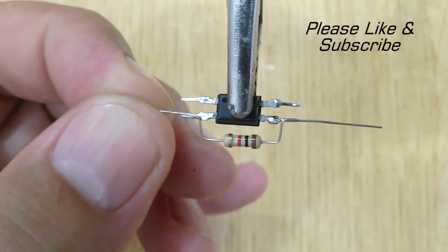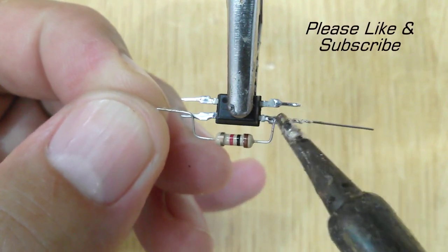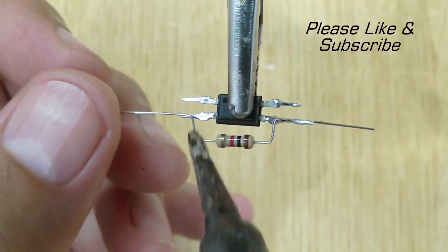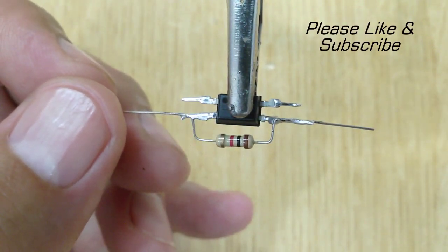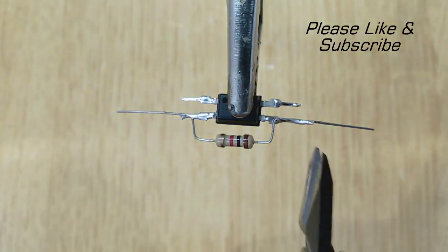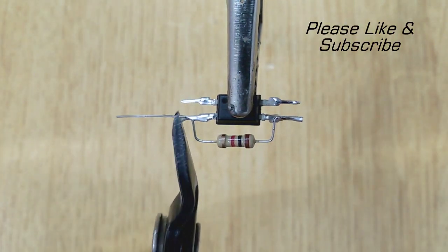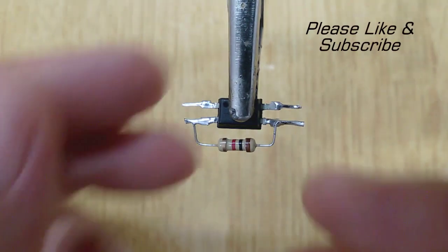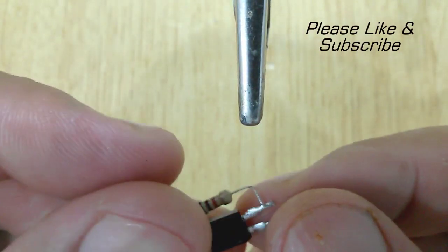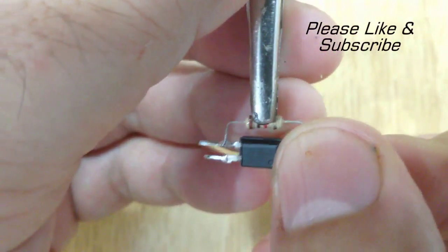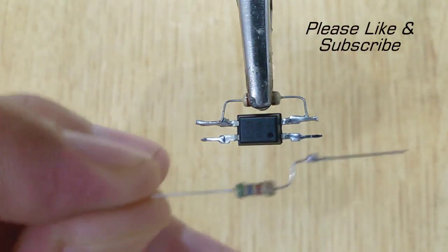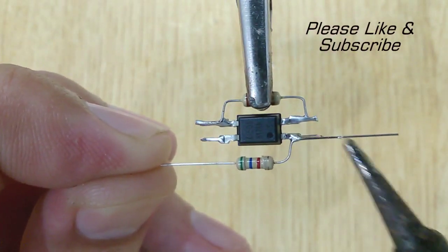Then solder 1K ohms resistor with the third and second pins of PC817. After that solder 5.6K ohms resistor with the first pin of PC817.